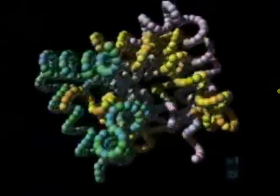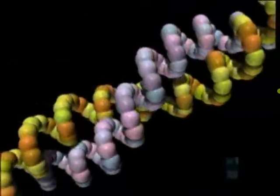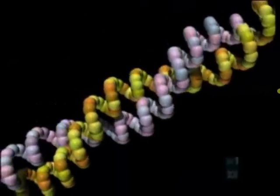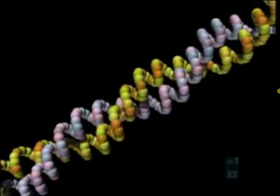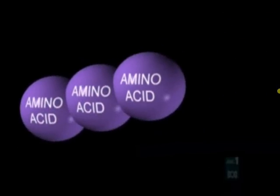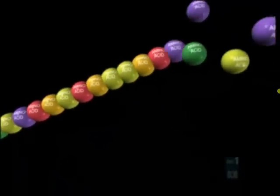Proteins, not surprisingly, are polymers. Huge molecules made up of repeating parts called monomers. The monomers of protein are amino acids, and life uses 20 different kinds.